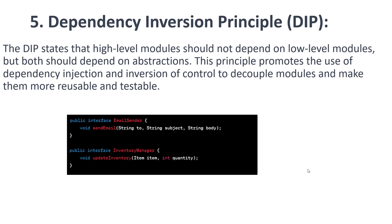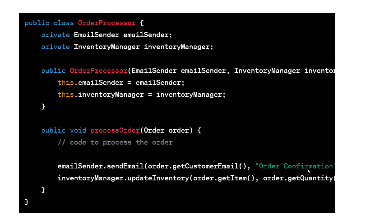The fifth principle is the Dependency Inversion Principle, or DIP. It states that high-level modules should not depend on low-level modules; both should depend on abstraction. This principle promotes the use of dependency injection and inversion of control to decouple modules and make them more reusable and testable. Here we have two interfaces — EmailSender and InventoryManager — both used in an OrderProcessor. In the constructor, both interfaces are injected, and during order processing, sendEmail and updateInventory methods of each interface are called. Thank you for watching this video and keep watching other videos related to ASP.NET Core.